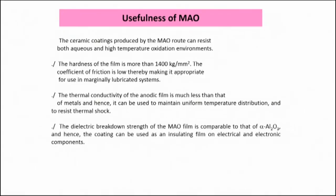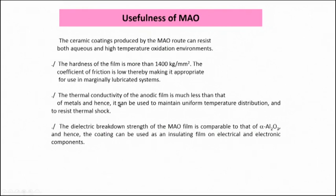Micro arc oxidation coating can be applied on alloys, which is otherwise not possible with typical anodization. The hardness of the MAO film is more than 1400 kg/mm². The thermal conductivity is much lower than that of the metal and hence it can be applied for thermal barrier coating applications. The dielectric breakdown strength of the MAO film is comparable to that of alpha alumina, and hence the coating can be used as an insulating layer for electrical and electrical generator applications.